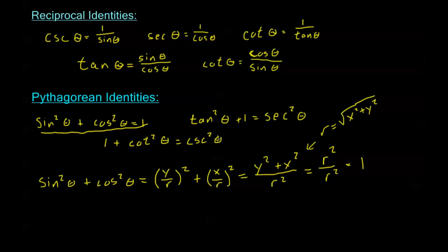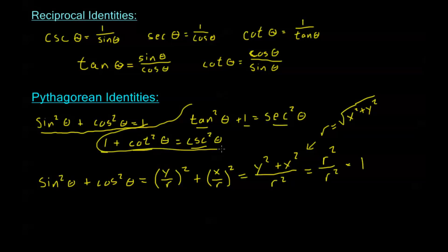To get the other two identities, divide both sides of the first identity by sine squared. We get sine squared over sine squared, which is 1; cosine squared over sine squared, which is cotangent squared; and on the right side, 1 over sine squared, which is cosecant squared. And if we divide both sides by cosine squared, we get tangent squared plus 1 equals secant squared. We can easily derive these two simply by dividing the first identity by either sine squared or cosine squared.